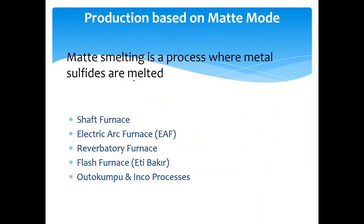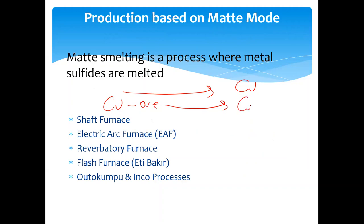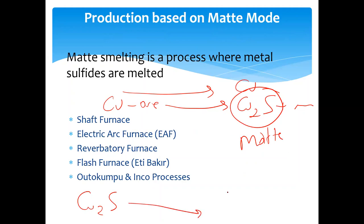Now I would like to mention the production process. There are various processes to directly produce metallic copper, but first of all, copper ore is converted into copper sulfide mixed with other metal sulfides — we call it matte. And then copper sulfide is converted into elemental metallic copper. So it has to be done step by step, and there are certain reasons for this.